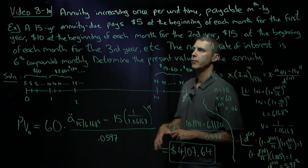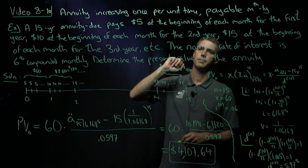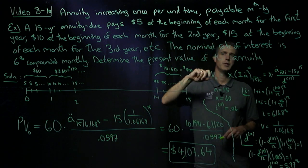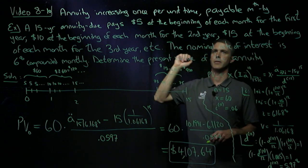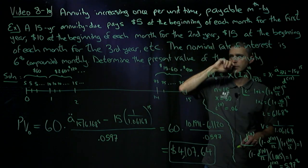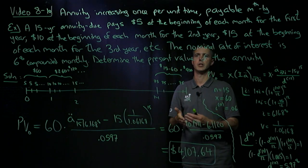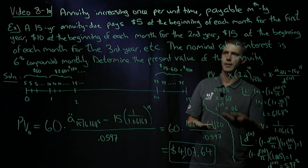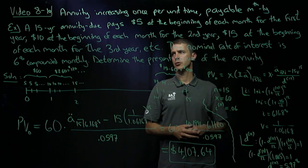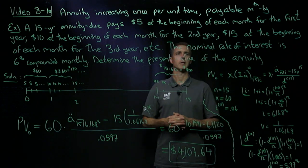So we are told we have a 15-year annuity due, paying $5 at the beginning of each month for the first year, $10 at the beginning of each month for the second year, $15 at the beginning of each month for the third year, etc. So each year, the monthly payment increases by $5. Nominal rate of interest is 6% compounded monthly, and we'd like the present value.